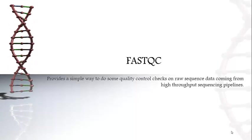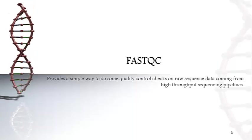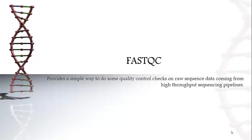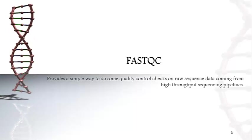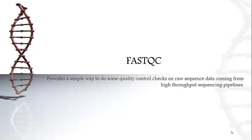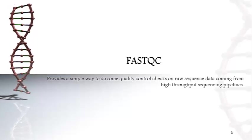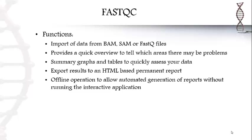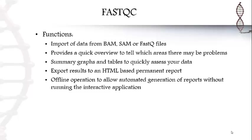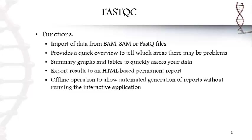FastQC is the next tool we will look at. It helps in checking the quality of raw sequences and makes sure you have accurate reads. There are a variety of input formats that can be used with FastQC, and one of its most convenient features is that it can run offline quality assessments, so you won't have to stay with it until it gets done.